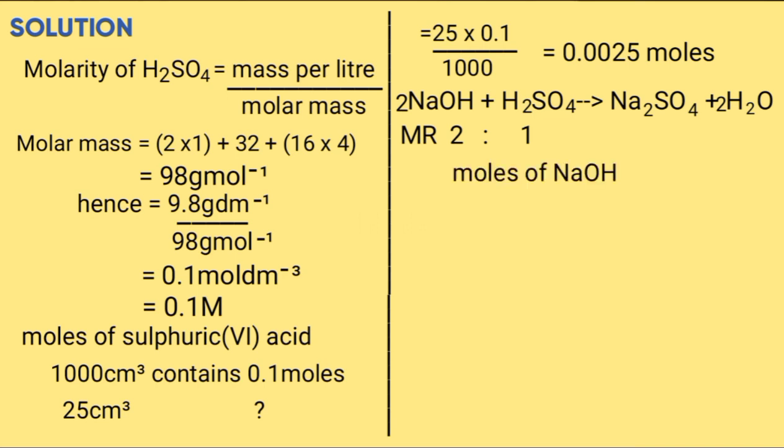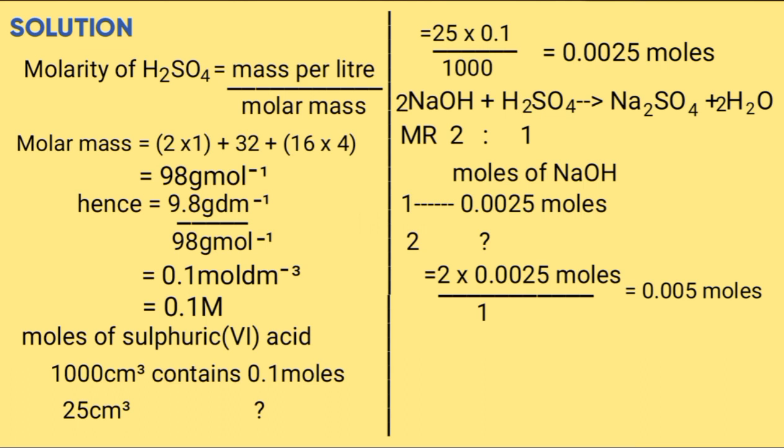Moles of sodium hydroxide will be 1 contains 0.0025 moles, what about 2? Cross multiply, you get 0.005 moles. Concentration of sodium hydroxide in moles per liter will be obtained by 20 cm³ contains 0.005 moles, what about 1000 cm³? Cross multiply, you get 0.25 moles per dm³.